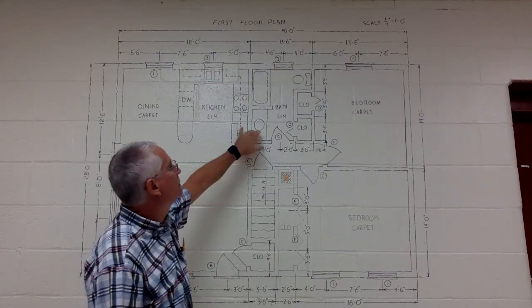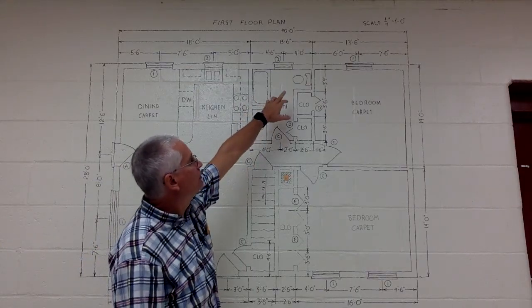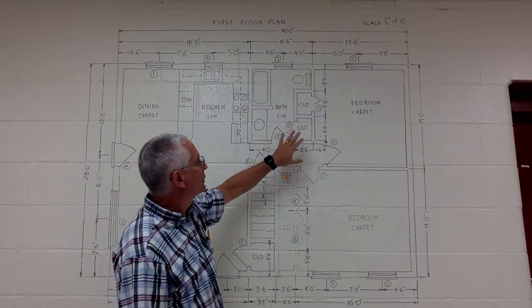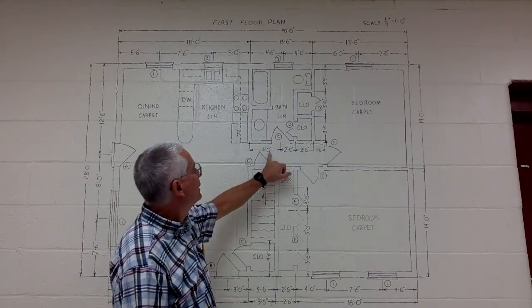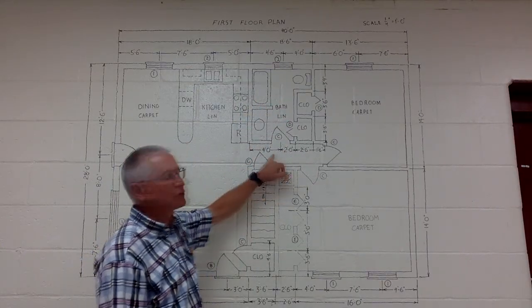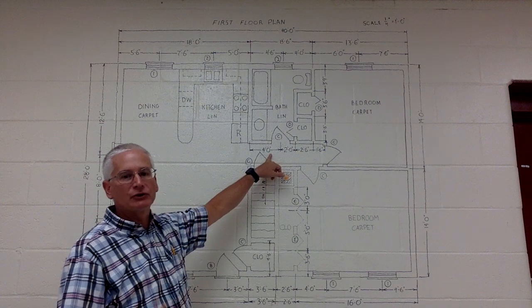LIN — the flooring in this particular kitchen is linoleum; LIN stands for linoleum. A wall between the kitchen and bathroom. A sink in the bathroom, tub, toilet, a couple of closets. Again, dimensions show you where each of the individual things happen to be.